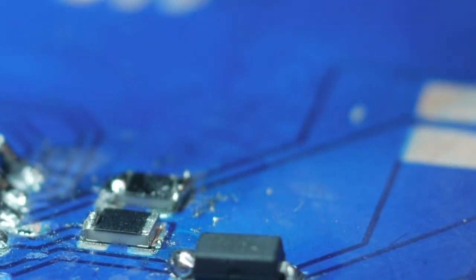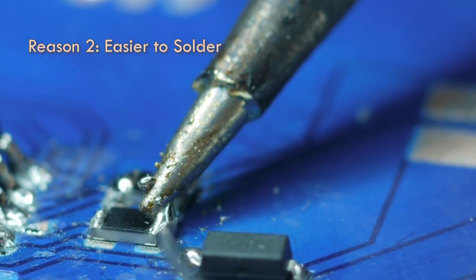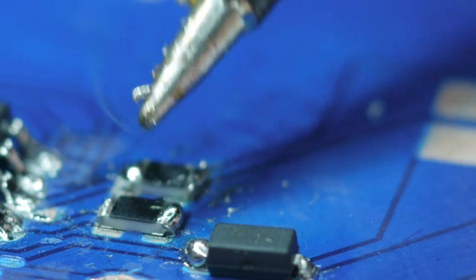The second reason is the solder resist properties of solder mask. Masking the areas where you don't need solder will help you solder where you do need to solder.